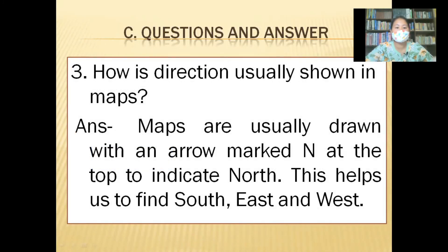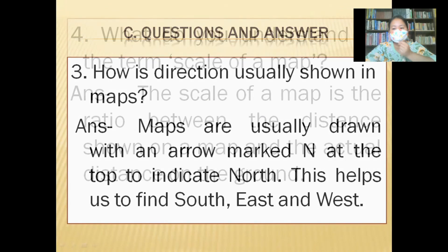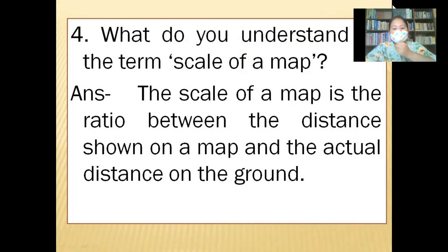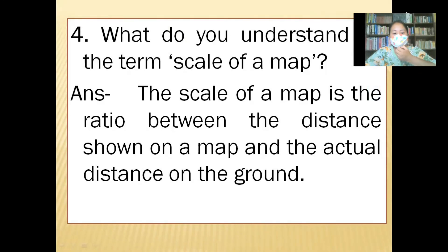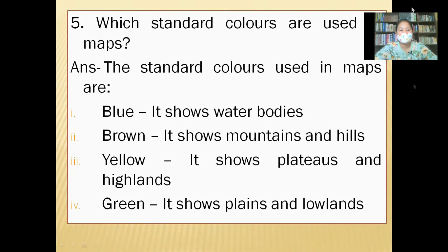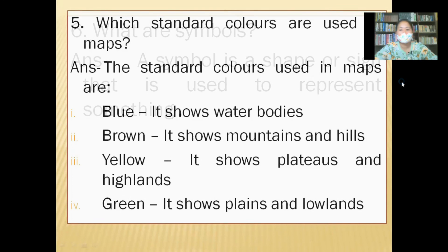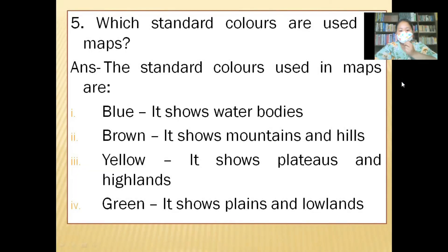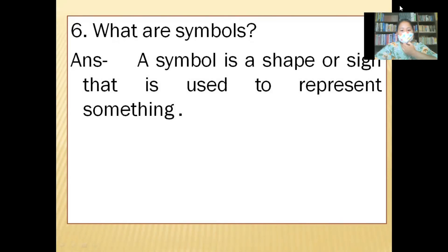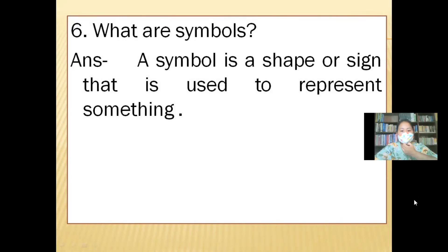Section C, question and answer. Question three: How is direction usually shown in maps? Answer: Maps are usually drawn with an arrow marked at the top to indicate north. This helps us find south, east, and west. Question four: What do you understand by the term scale of a map? Answer: The scale of a map is the ratio between the distance shown on a map and the actual distance on the ground. Question five: Which standard colors are used in maps? Answer: Blue shows water bodies; brown shows mountains and hills; yellow shows plateaus and highlands; green shows plains and lowlands. Question six: What are symbols? A symbol is a shape or sign that is used to represent something.